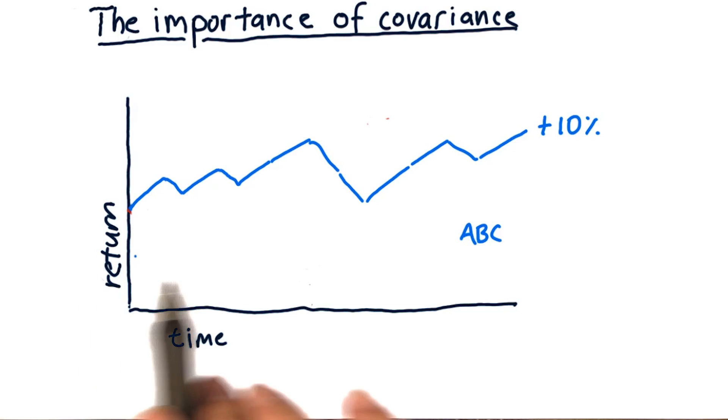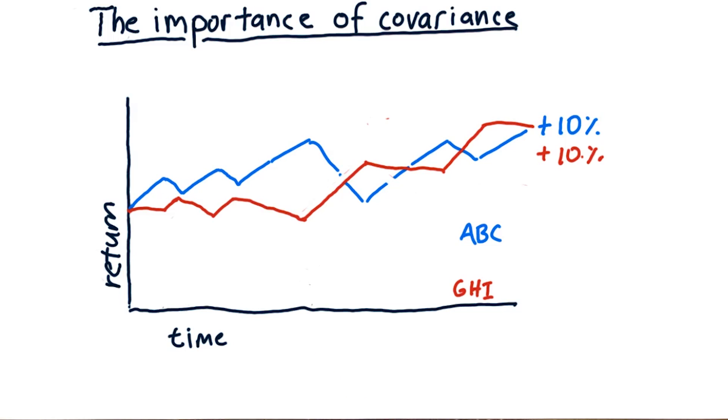Here's one, ABC, it's gone up 10%. Here's another stock, GHI, it's also gone up 10%. But notice it tends to zig when ABC zags. So it's not going in lockstep with ABC.